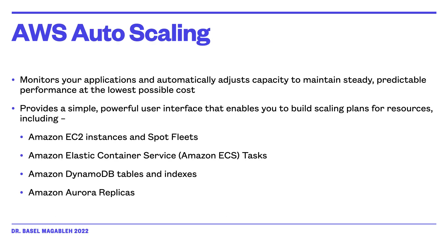AWS Auto Scaling is a separate service that monitors your application and automatically adjusts capacity to maintain steady, predictable performance at the lowest possible cost. It provides a simple, powerful user interface that enables you to build scaling plans for your resources, including Amazon EC2 instances, container services, DynamoDB, and Aurora replicas.